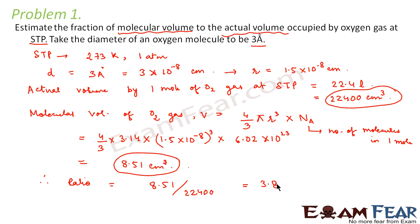This comes out to be 3.8 × 10⁻⁴. So this is the fraction of molecular volume to actual volume. Molecular volume means the volume occupied by all the molecules of oxygen gas, while actual volume is the volume that one mole of oxygen gas occupies at standard temperature and pressure. Actual volume is what happens in reality; molecular volume is what we predict by calculation.